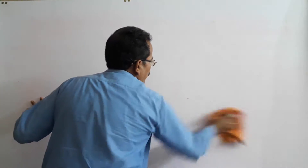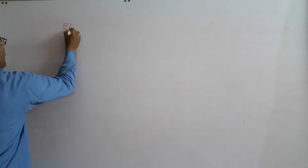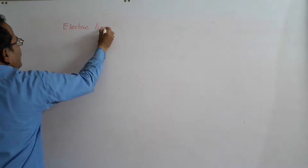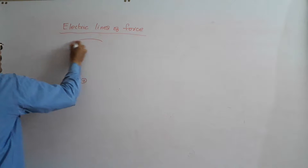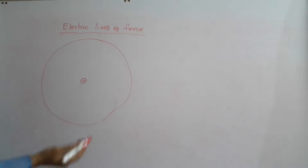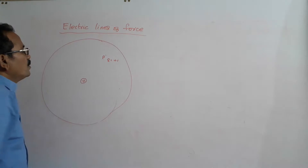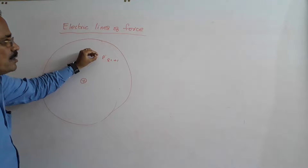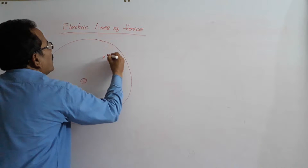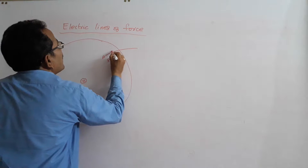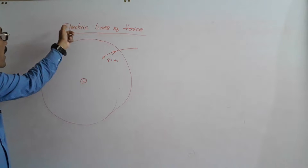What are Electric Lines of Force? Consider a positive charge creating an electric field around it. Now bring a unit positive charge, Q equals plus 1, to a point P in the field and let it move freely. Due to the force of repulsion, that unit positive charge goes away tracing a path. That path traced by a unit positive charge is called Electric Lines of Force.